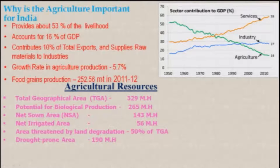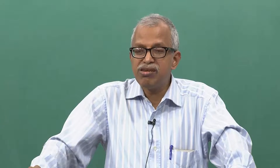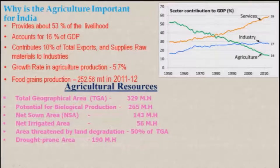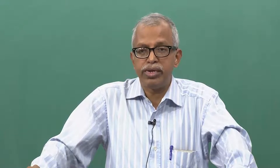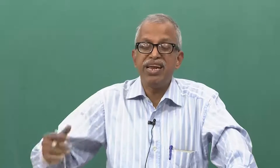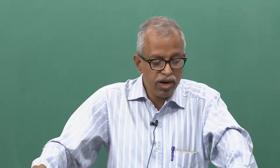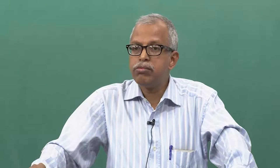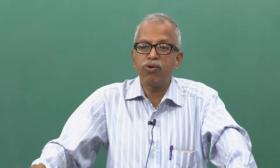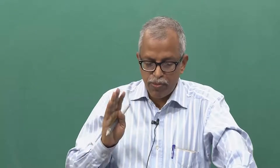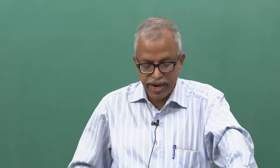Area threatened by land degradation accounts for about 50 percent, because of wrong methods of cultivation and industrialization our soil is being spoiled. The drought prone area is 190 mega hectares, but I think this can be changed if we develop a relationship with mother nature. If we make our system integrated and sustainable, drought prone area can be managed well — according to me, drought is largely manmade.